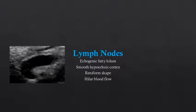Let's start by looking at lymph nodes. Lymph nodes should have an echogenic fatty hilum and a smooth hypoechoic cortex. They are often described as reniform in shape, meaning they look a lot like a kidney or a bean, and they often have hilar blood flow, which you can detect coming into the lymph node at the echogenic fatty hilum.